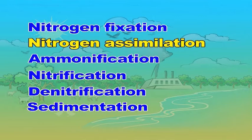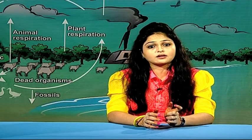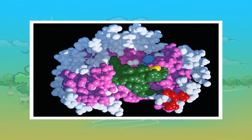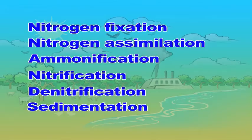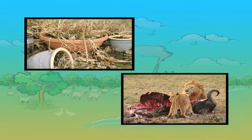Now we will be looking into nitrogen assimilation. Inorganic nitrogen in the form of nitrates and ammonia is taken up by plants from soil. Plants utilize these inorganic nitrogenous compounds to produce organic nitrogenous compounds like amino acids, proteins, enzymes, nucleic acid, chlorophyll, etc. Animals consume plants and thus obtain nitrogenous organic compounds in their body.